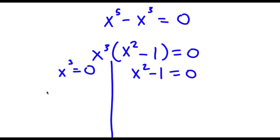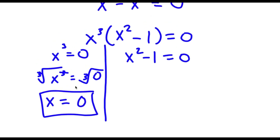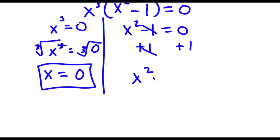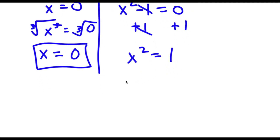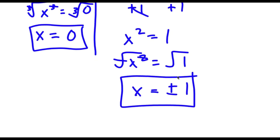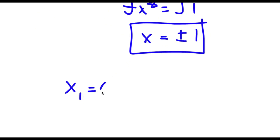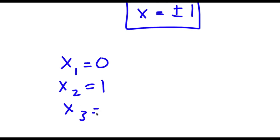For x to the power of 3 equals 0, I take the cube root on both sides. The cube root of x cubed is x and the cube root of 0 is 0, so x equals 0 is one solution. For x squared minus 1 equals 0, I add 1 to both sides to get x squared equals 1. Taking the square root on both sides gives x equals positive or negative 1 — two more solutions. So the three solutions are 0, 1, and negative 1.